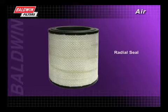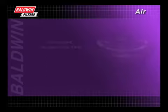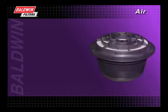Disposable housing filters are designed with both the filter and housing in one unit and are easy to replace. Radial seal filters are designed with molded ends to make servicing easier and more cost-effective. Corrugated straight-through flow filters are designed to have high flow and high capacity in a more compact filter.